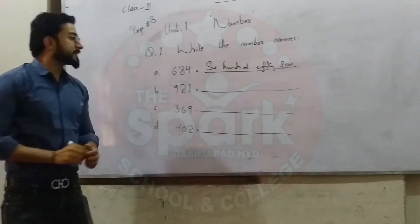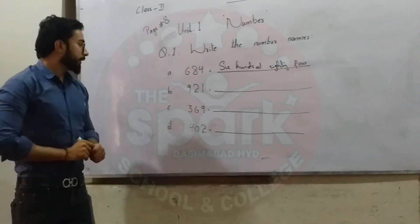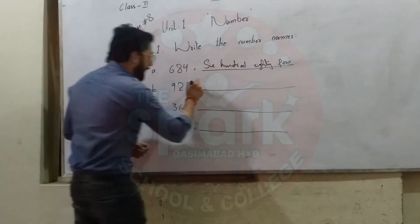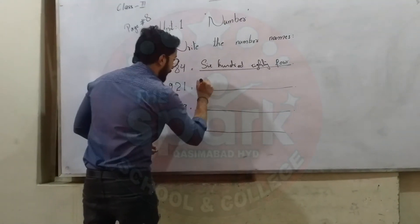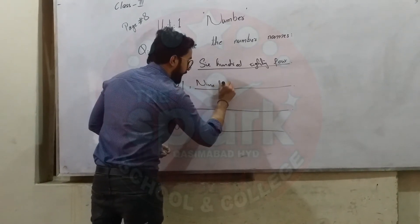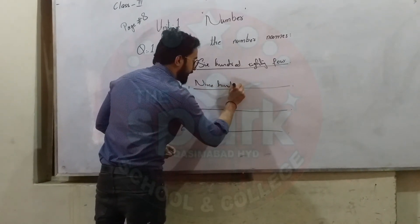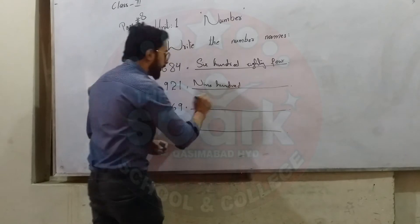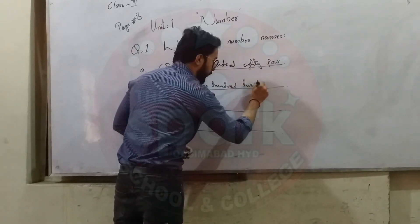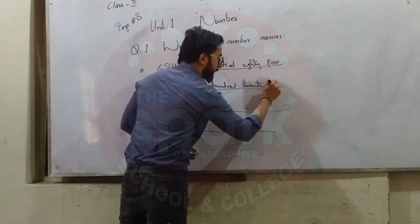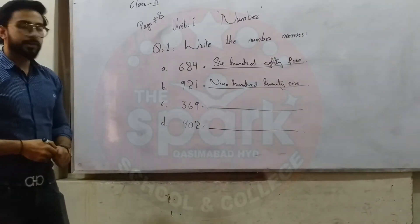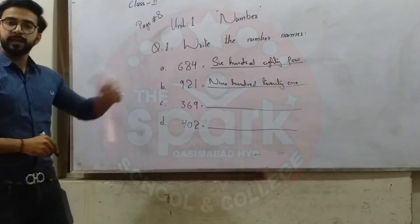Now the next one is 921. N, I, N, E: Nine. H, U, N, D, R, E, D: Hundred. T, W, E, N, T, Y: Twenty. O, N, E: One. Here we write 921 in spelling.